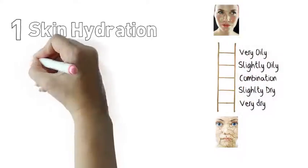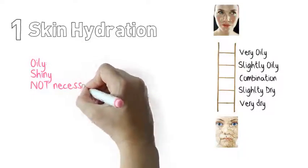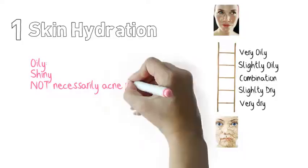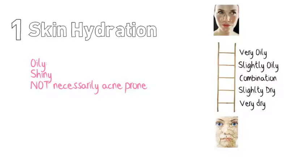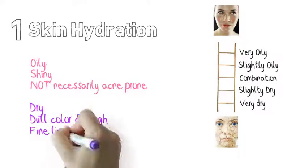Oily skin often appears shiny but in spite of what is commonly said, it is not necessarily acne prone. Dry skin looks dull and rough and tends to form fine lines.